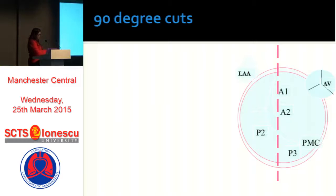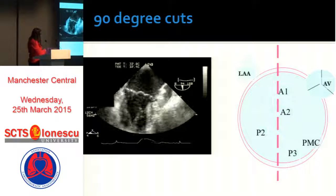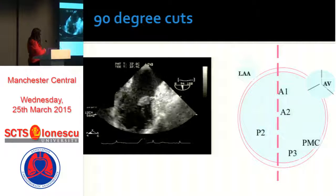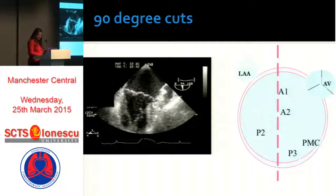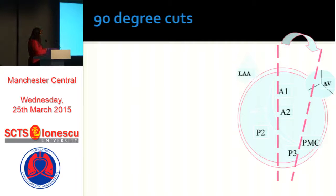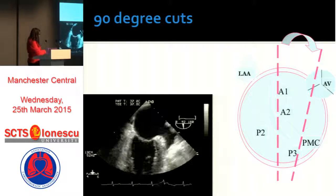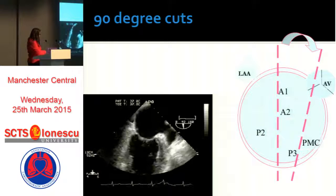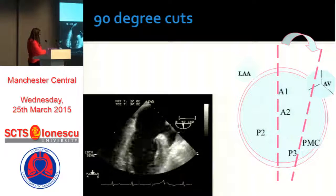At 90 degrees, orthogonal to the zero-degree view, you should cut through A1 and A2 then P3 at the end. On the TOE picture you see a long anterior leaflet and a smaller posterior leaflet — the base of the anterior leaflet is A1, the coaptation point is A2, and on the other side is P3. If you rotate to bring the aortic valve into the cut plane, you can then cut through the posteromedial commissure — that is a true commissural view.